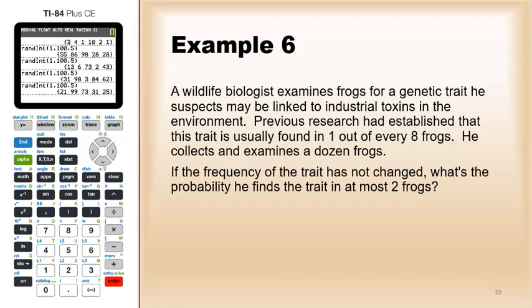Okay, Example 6. A wildlife biologist examines frogs for genetic traits he suspects may be linked to industrial toxins in the environment. Previous research had established that this trait is usually found in one out of every eight frogs. He collects and examines a dozen frogs. So if the frequency of the trait does not change, what's the probability he finds the trait in at most two frogs?